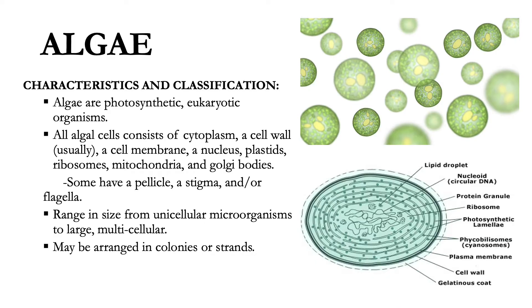Some algal cells have a pellicle, or a thickened cell membrane; a stigma, or a light-sensing organelle also known as the eye spot; and/or flagella.